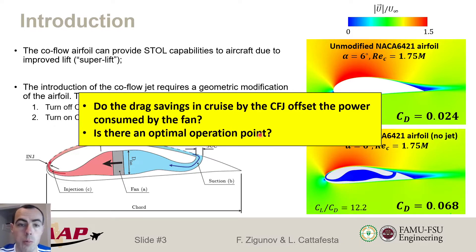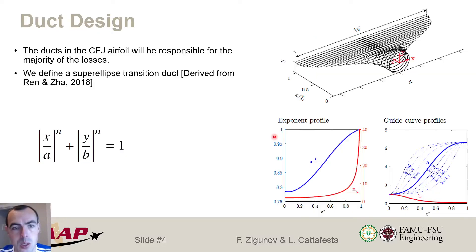So then the question as a research here is, can those drag savings in cruise offset the power consumed by the fan, which is required to operate the system? And is there maybe an operational point that is optimal? So in order to solve this problem and to provide an answer, we first have to define the design geometry of the fan.